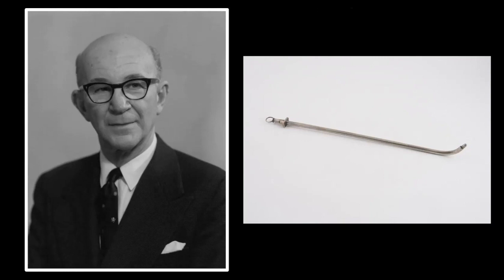That right there is the original gum elastic bougie, which was actually used for urethral dilation. This anesthesiologist saw it and said, 'I'm going to use that to intubate people as an endotracheal tube introducer.' That man was Sir Robert McIntosh — yes, of the McIntosh blade — who gave us standard geometry laryngoscopy as well as the first ever bougie intubation.